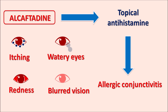Alcaftadine is a topical antihistamine which is going to inhibit the actions of histamine, thereby controlling the allergic response. Today in this video we are going to discuss the chemical nature of this drug, how this drug acts, what are the precautions, contraindications, and side effects of this drug.